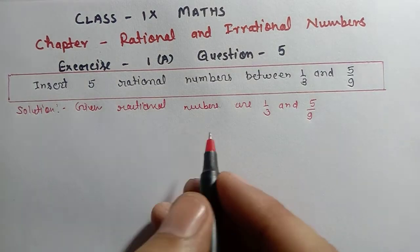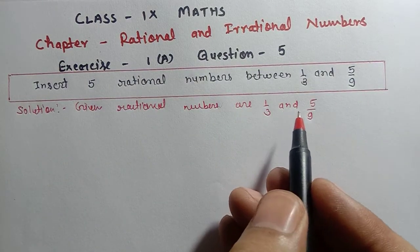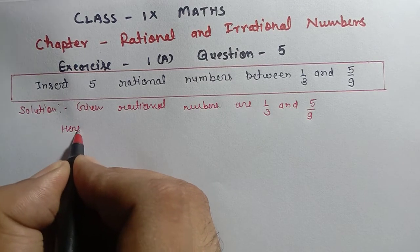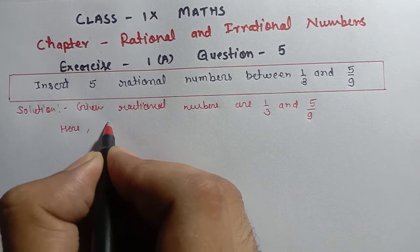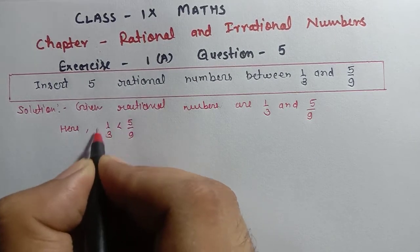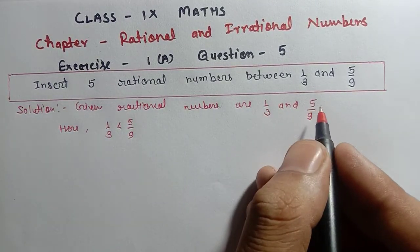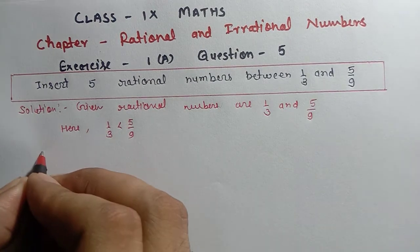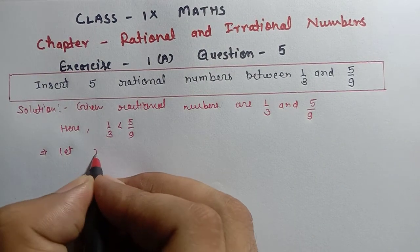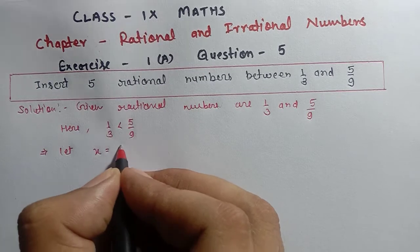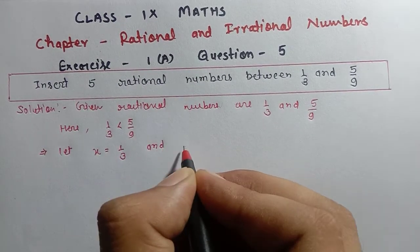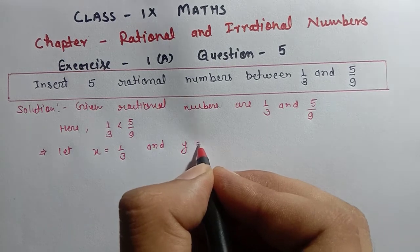सबसे पहले हम यहाँ पर check करेंगे कौन bigger और कौन smaller है। Here, 1/3 is less than 5/9. आपका 1/3 less than है 5/9 से। So, let x equal to जो भी small होता है उसे हम x ले लेते हैं, and जो bigger होता है उसे y ले लेते हैं।